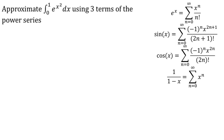We want to approximate the definite integral from 0 to 1 of e to the x squared dx using three terms of the corresponding power series. And so we're going to need to start by finding a series for e to the x squared.